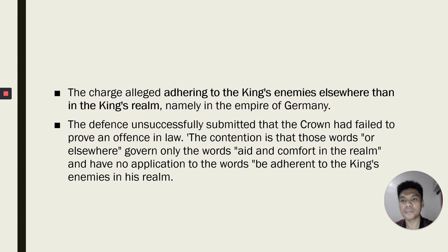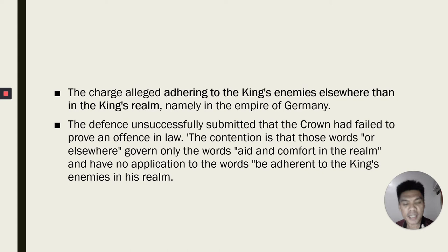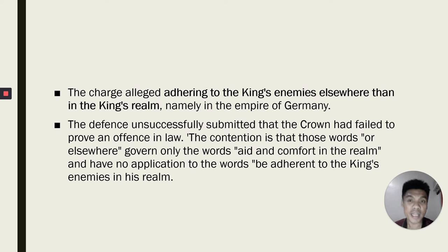The charge alleged adhering to the king's enemies elsewhere than in the king's realm, namely in the Empire of Germany. He was accused of convincing and inducing British soldiers who were prisoners of war in Germany to renounce their allegiance to the king, and of course, supporting the enemy. But the defense submitted that the crown had failed to prove an offense in law. Its contention is that the words 'or elsewhere,' which would cover Germany, govern only the words 'aid and comfort in the realm,' but not the words 'be adherent to the king's enemies in his realm.'